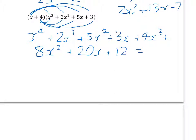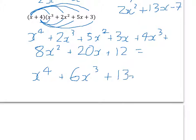Now we can collect together all the x to the power of 4, x cubeds, x squareds, x's and numbers. There's only one x to the power of 4. For x cubed, there's 1 and 2 and 4, so that's 6. For the squared part, there's 5 and 8, so 13. For the x part, 3x and 20x gives 23x, and plus 12. That's your final answer.